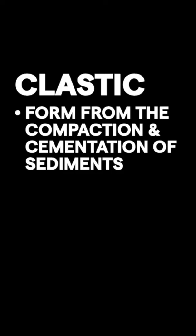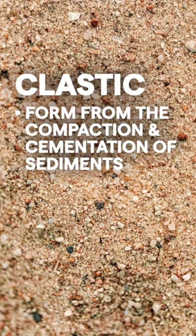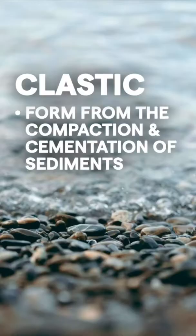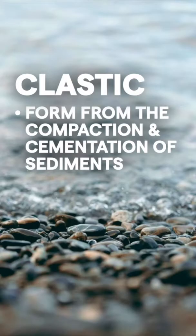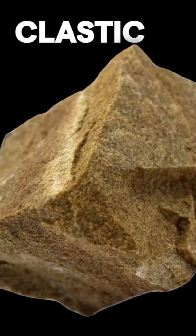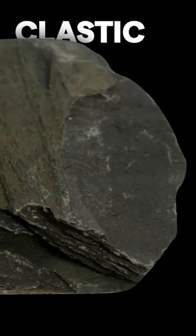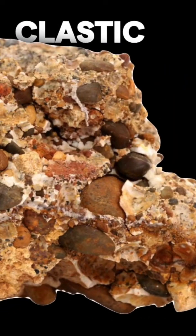Let's dig right in with clastic rocks. Clastic rocks form from the compaction and cementation of sediments. Basically, that means you take stuff like sand or mud or even pebbles and you compact them together, usually underwater, and they will form clastic sedimentary rocks like this sandstone or shale or conglomerate.